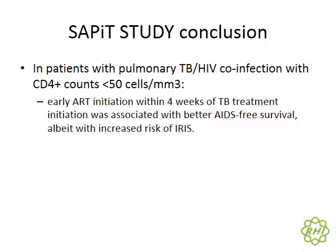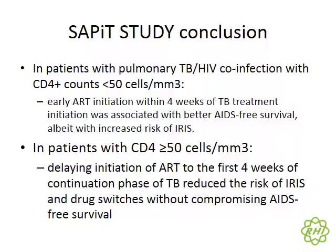Although there is a much higher risk of IRIS, especially in patients with very low CD4 counts, the survival rate was better with early ART. Waiting too long with very low CD4 counts leads to a higher mortality rate. However, in patients with CD4 counts over 50, delaying ART initiation to the first four weeks of the continuation phase reduces the risk of IRIS and drug switches without compromising AIDS-free survival.